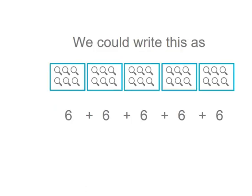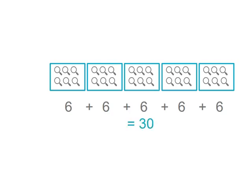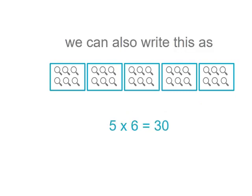So to find out how many we have altogether, we could add six five times, which is repeated addition: six plus six plus six plus six plus six, which equals thirty. We can also write this as five groups of six, which equals thirty. And they mean the same thing — how many we have altogether.